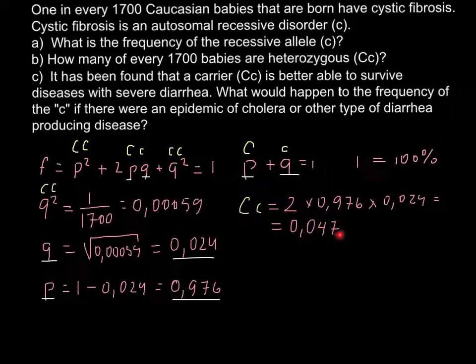We just move the comma two decimal places to the right and we get 4.7%. This is the frequency of the heterozygous condition. So we can put this number here: 4.7% frequency.